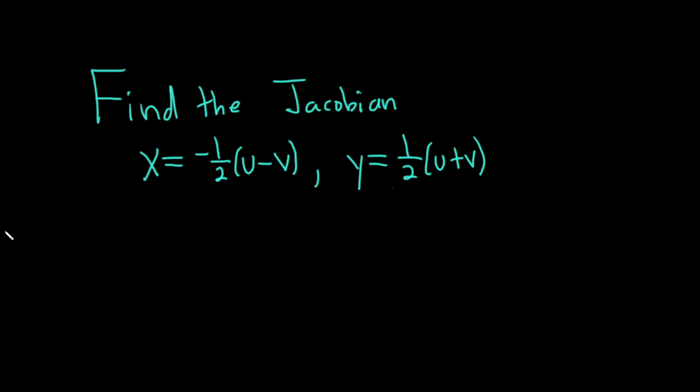Hello, in this problem we're going to find the Jacobian. So we have x equals negative one half times u minus v and y equals one half times u plus v.